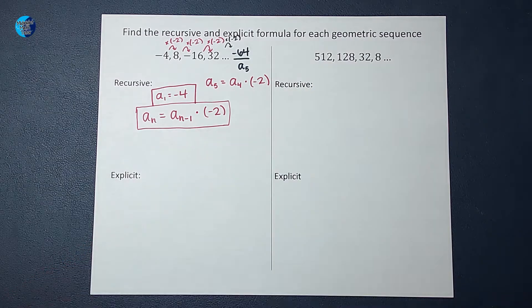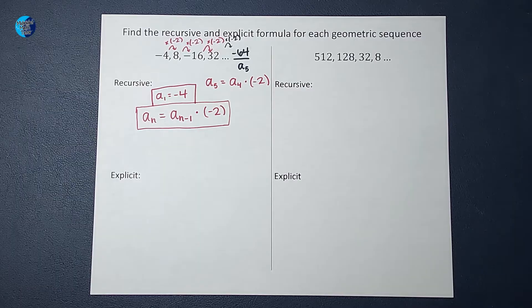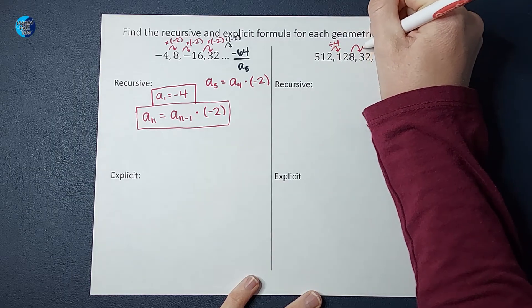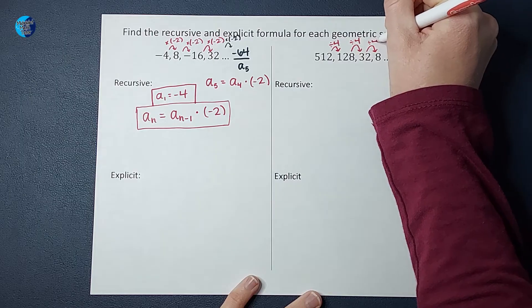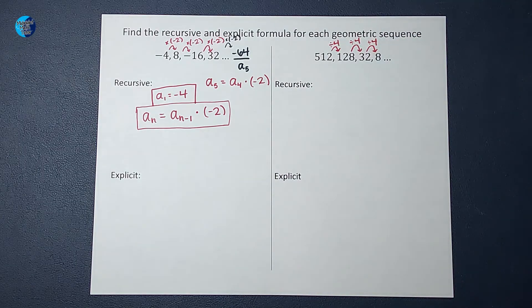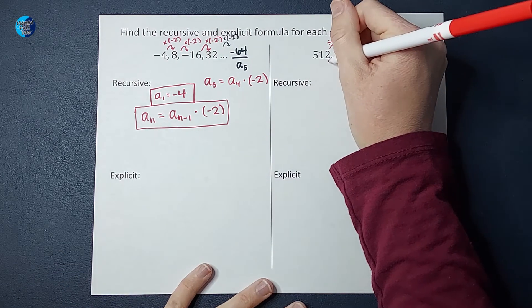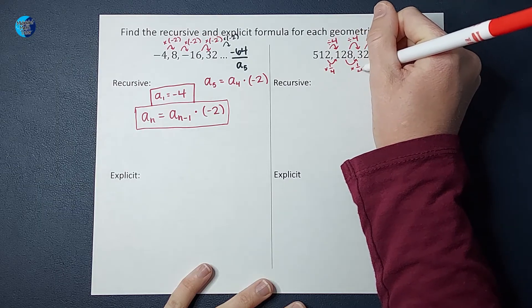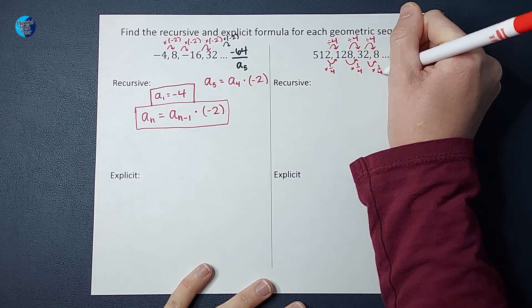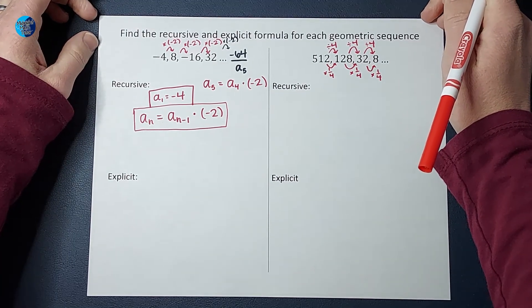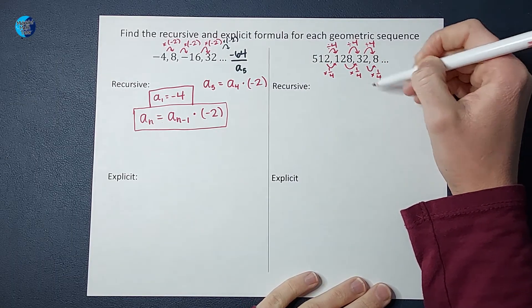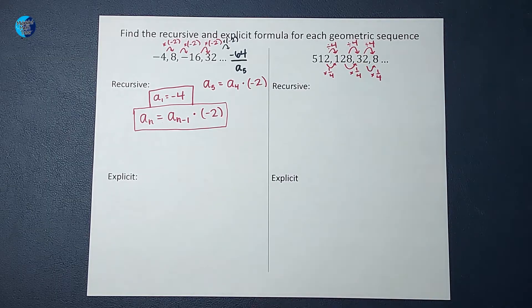When I look at these, I'm trying to figure out how they're related to each other, and I figure out that we are dividing by four each time. When we are working with sequences and these formulas, instead of thinking of division, we like to think of it as multiplying by a fraction. So we could also think of this as multiplying by one-fourth. It's the same thing.